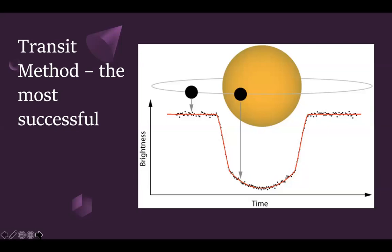The most successful method for detecting exoplanets is the transit method. Whenever a planet is circling around a star and passes in front of it, we can see a dip in the brightness or luminosity of the star. By looking at these dips in the luminosity data, we can detect and confirm that there is an exoplanet there. That's a brief history of how exoplanets are detected.